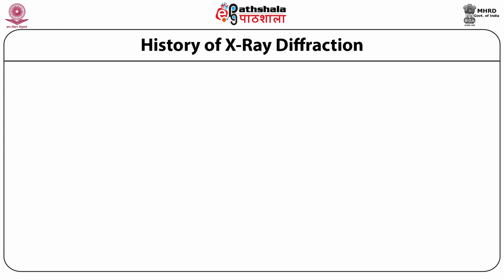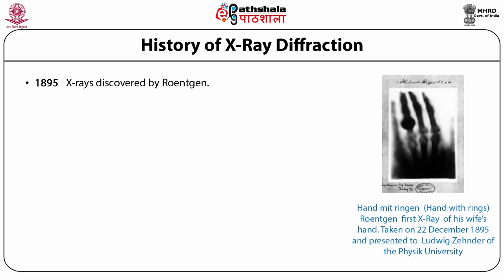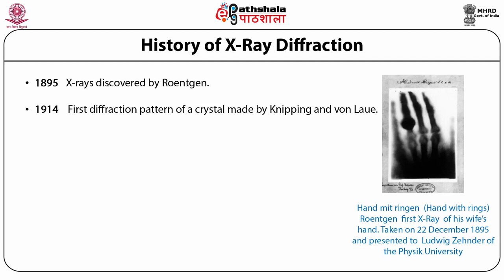Now we will look at the history of this technique. A German physicist is known as the discoverer of X-rays; his discovery was dated in 1895. Because he was the first to systematically study X-rays, he is also the one who gave them the name X-rays. The image on the slide is the first X-ray image of Röntgen's wife's hand, taken on 22nd December 1895 and presented to the Physics University. Then in 1914, the first X-ray diffraction pattern of a crystal was made by Knipping and Von Laue.